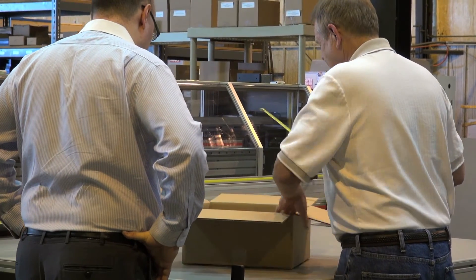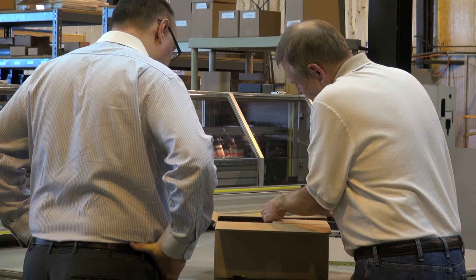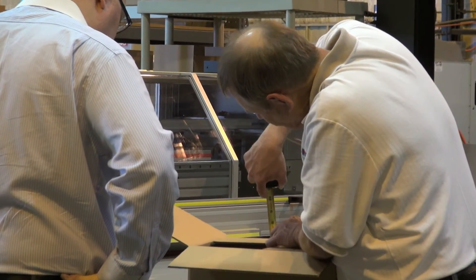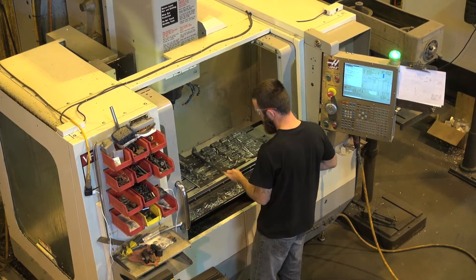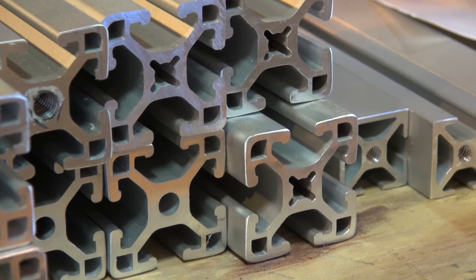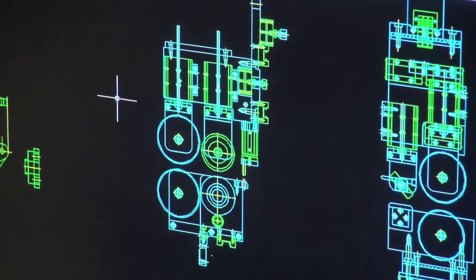When a company does need a custom box of a specific size or style, we can come up with that immediately because right here in Kansas City we make all the parts for the machine, we make all the assembly, everything is here, we do all of our own programming. So everything is contained within T-ROC.